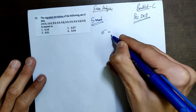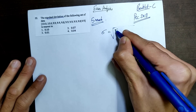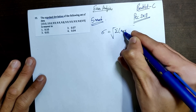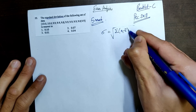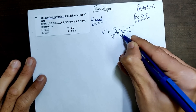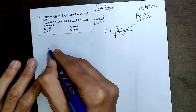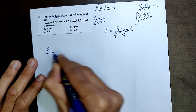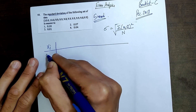We know that the standard deviation formula is given by Sigma equals under root of Sigma (XI minus X-bar) whole square divided by n, where n is the total number of terms.